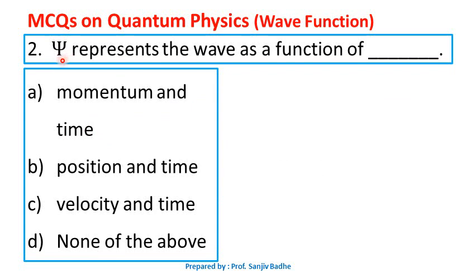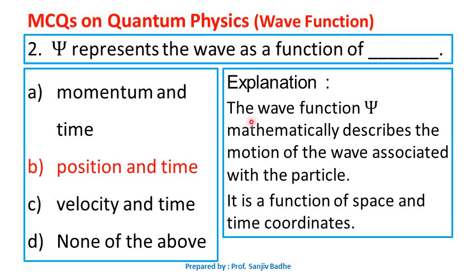Question number two. Psi represents the wave as a function of — and the options are: momentum and time, position and time, velocity and time, none of the above. The wave function psi actually mathematically describes the motion of the wave associated with the particle. It is not possible to locate the particle precisely at a point x, y, z. But this wave function psi can give us the probability of finding the particle at a given point x, y, z at a given time instance t. So, this wave function psi is a function of space and time coordinates.